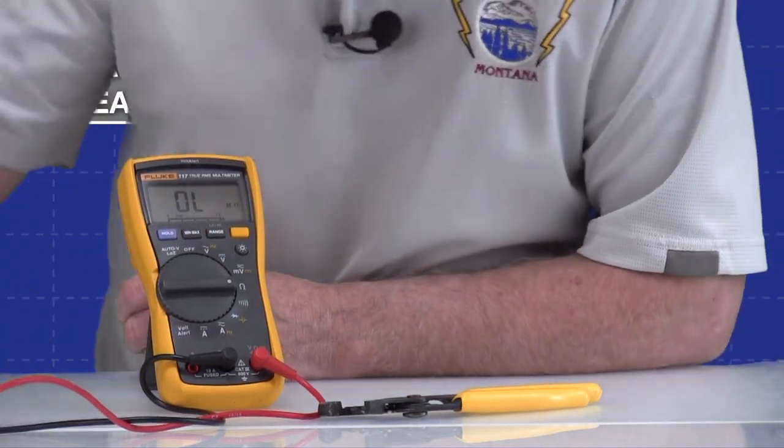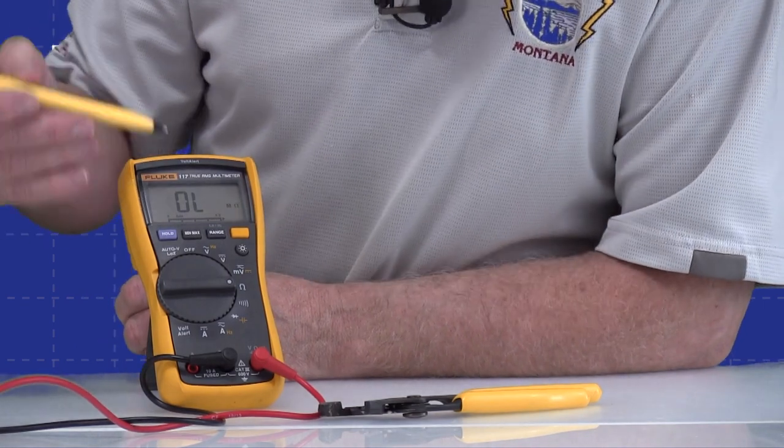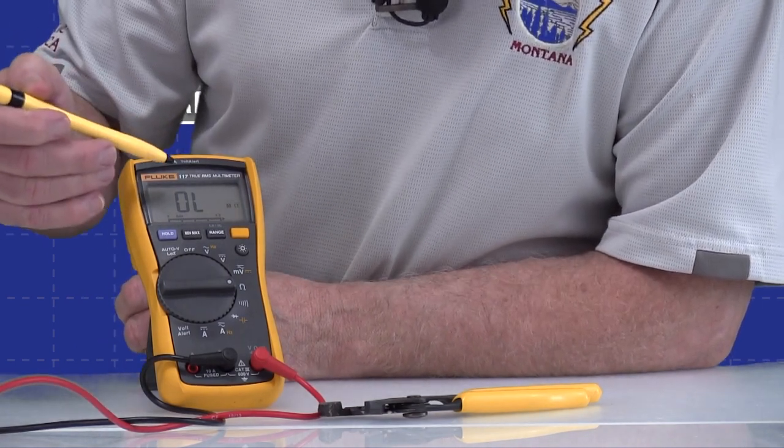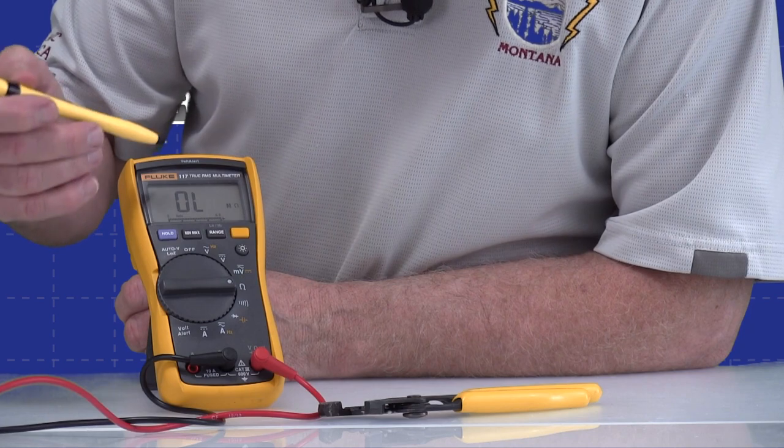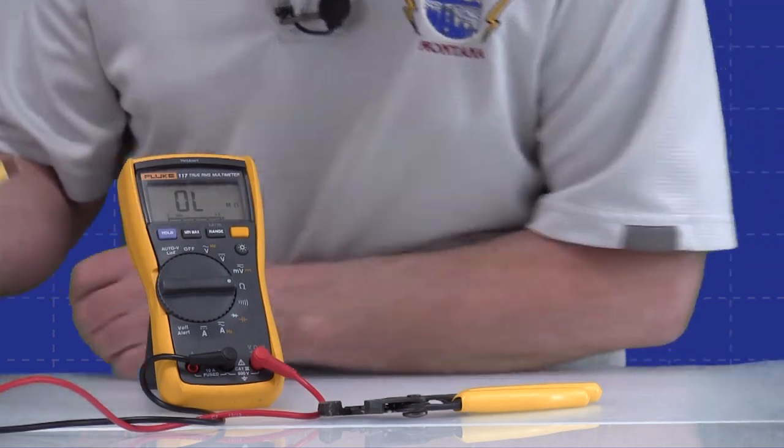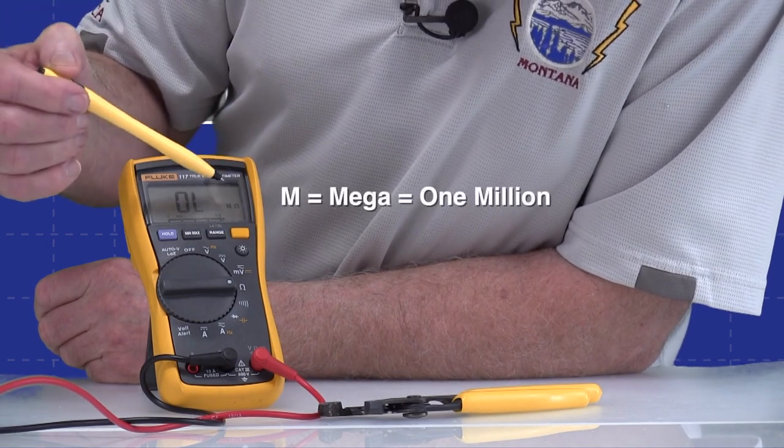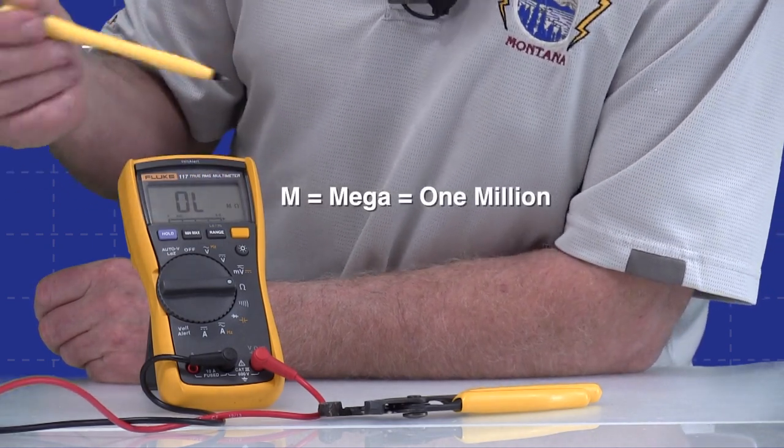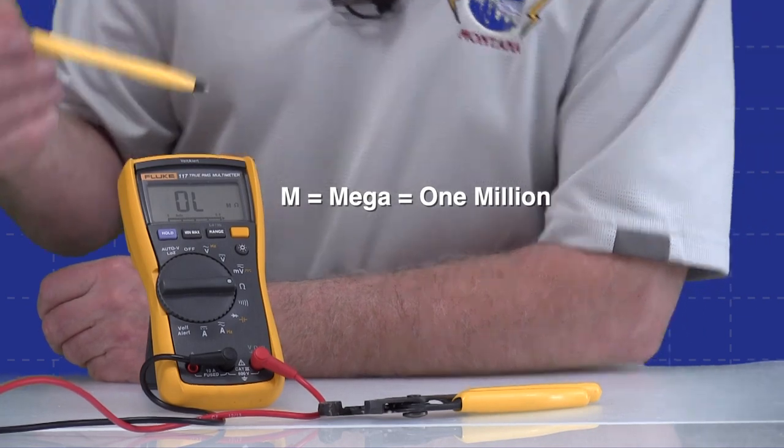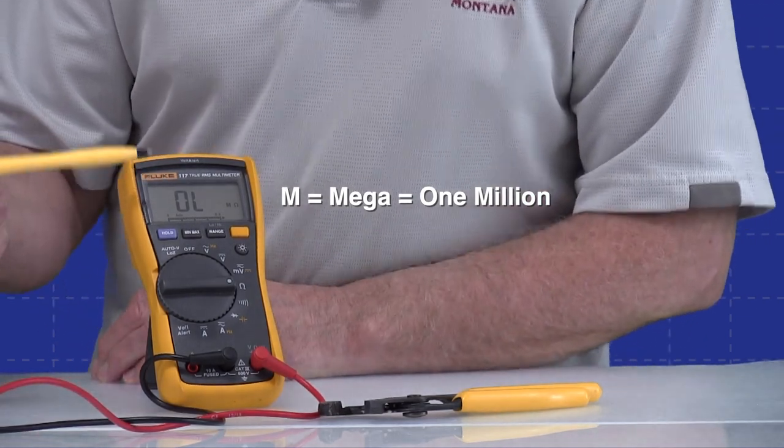And the first thing you'll notice is we're showing OL on the screen, which indicates out of range. In other words, it's taking no measurement or it's maximum resistance. It's not seeing anything. The other thing you'll notice, and I'm hoping you can see this fairly clearly, is there's a capital M and the ohm symbol. And the M is a prefix for megaohms.